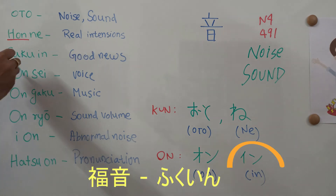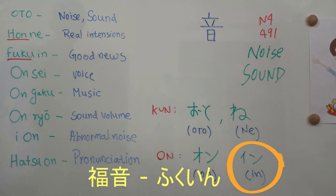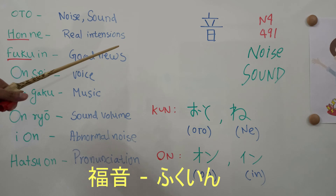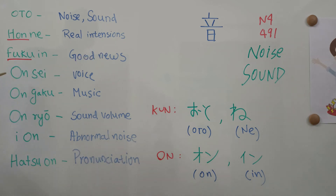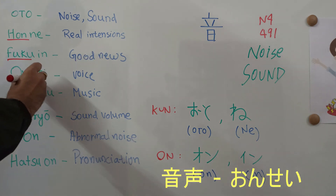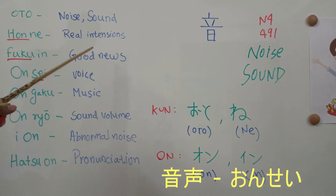The next word is 'Fukuin.' Here, 'Fuku' means blessings or good fortune. So good sound or good news gives the meaning of good news. The next word is 'Onsei' — here 'Sei' refers to the voice, so 'Onsei' refers to voice or the quality of sound.